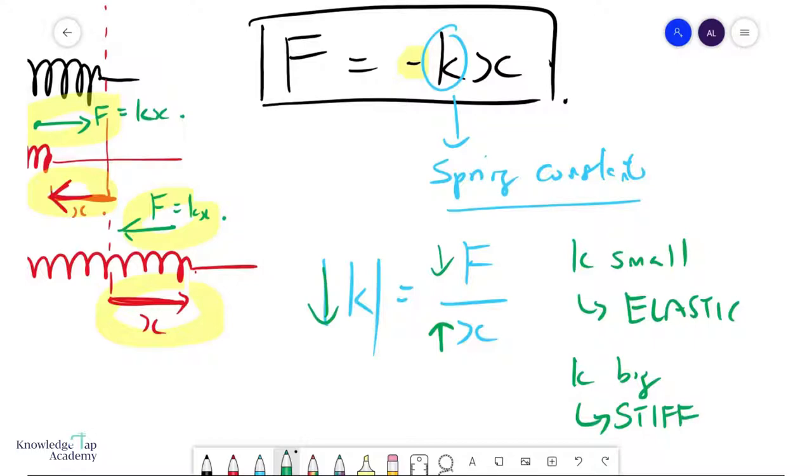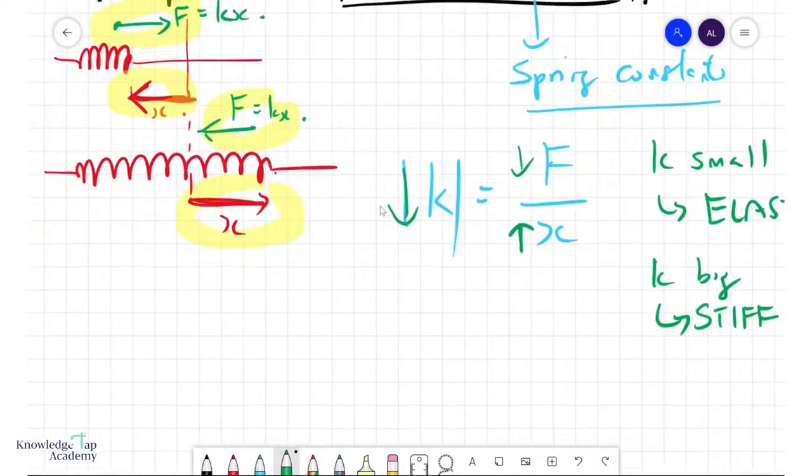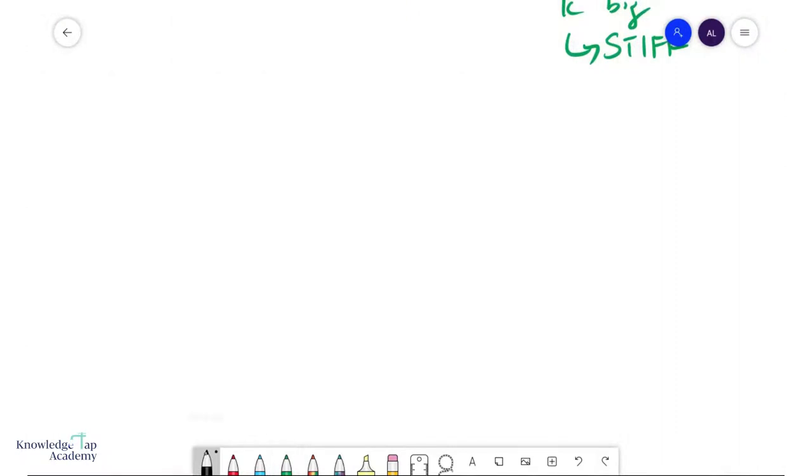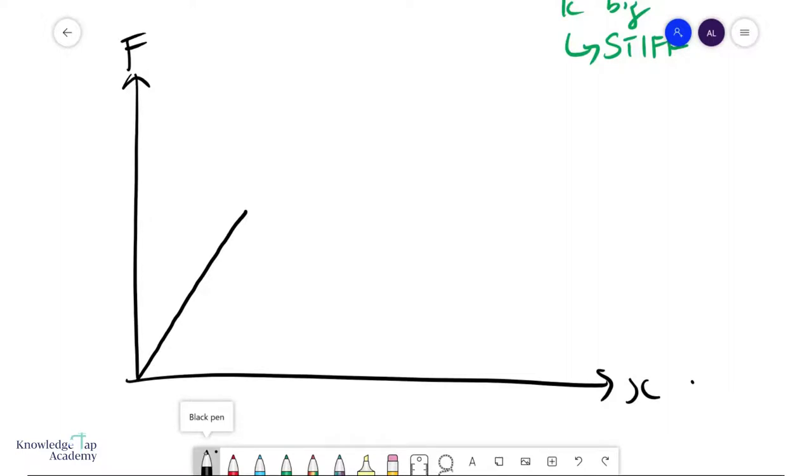Very nice. This is quite easy. It's quite a nice little law for us to use. We can also study how the F-extension graph of a typical object looks like. In most situations, an object obeys Hooke's law up to some point called the limit of proportionality.